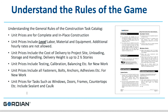The unit prices include the cost of delivery to the project site, unloading, storage, and handling — delivery height is up to two and a half stories. Unit prices include testing, calibration, and balancing for new work. Unit prices include fasteners, bolts, anchors, and adhesives for new work. Unit prices for tasks such as windows, door frames, and countertops already include sealant, meaning you will not be adding sealant or caulking as separate line items.